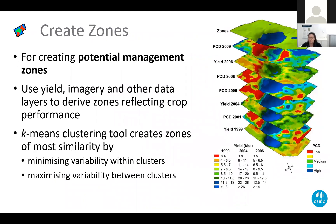The alignment of map layers promotes the ability to define management zones. PAT has a zone creation tool which can cluster map layers such as yield, NDVI, PCD, EM38 and elevation to create zones of similarity.